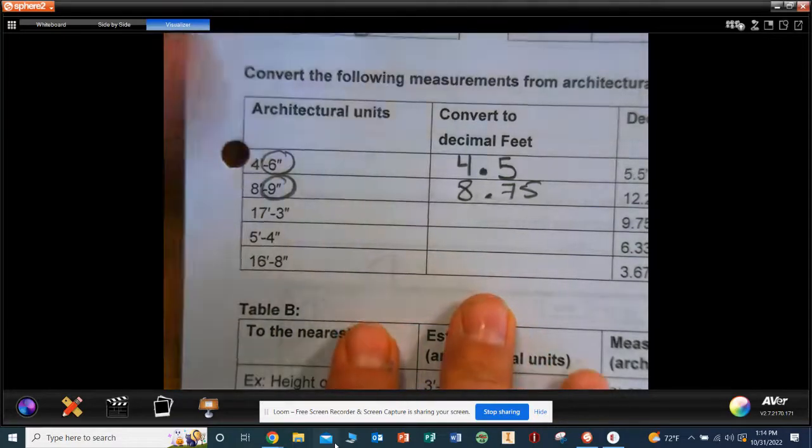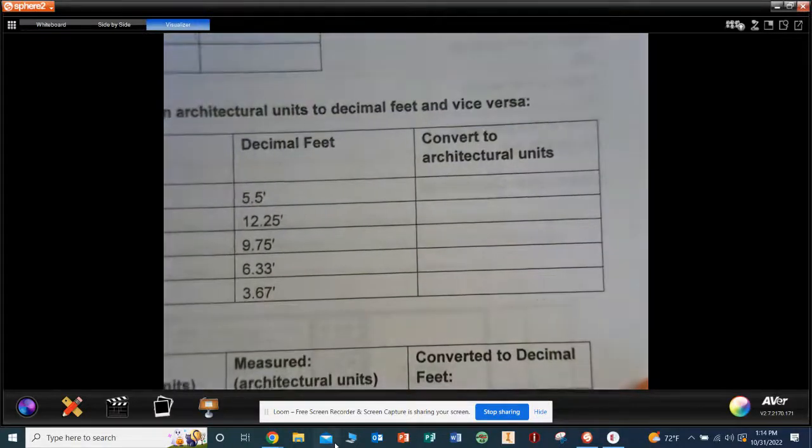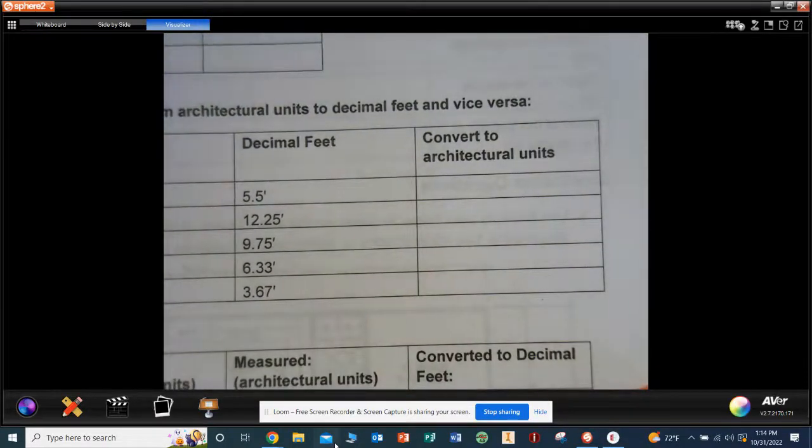All right, now the second part. Again, I'm not giving you all the answers. I'll be grading the ones I didn't fill out. We're going to go backwards. They give you the decimal feet, 5.5.